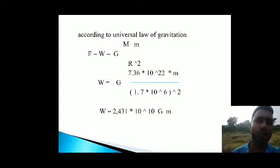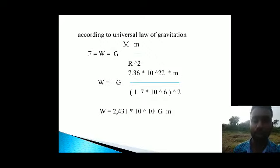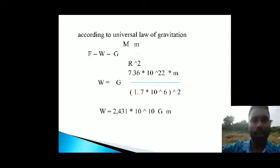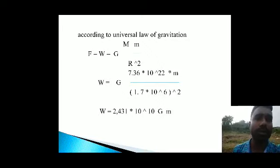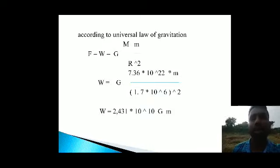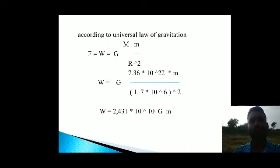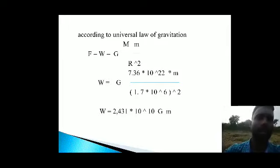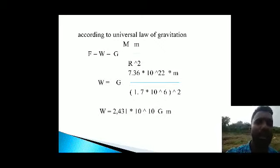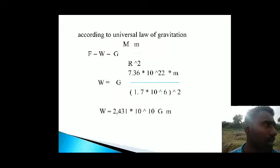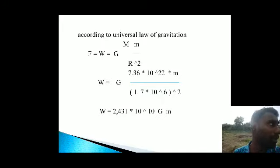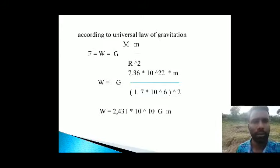When the object is on the Moon, we apply the universal law equation and set F equal to W, since the force of attraction of any body equals the weight of that object. So weight on the Moon equals G times M of Moon times m of object, divided by r squared — where r is 1.7 times 10 to the power 6, and r squared means we square that value.